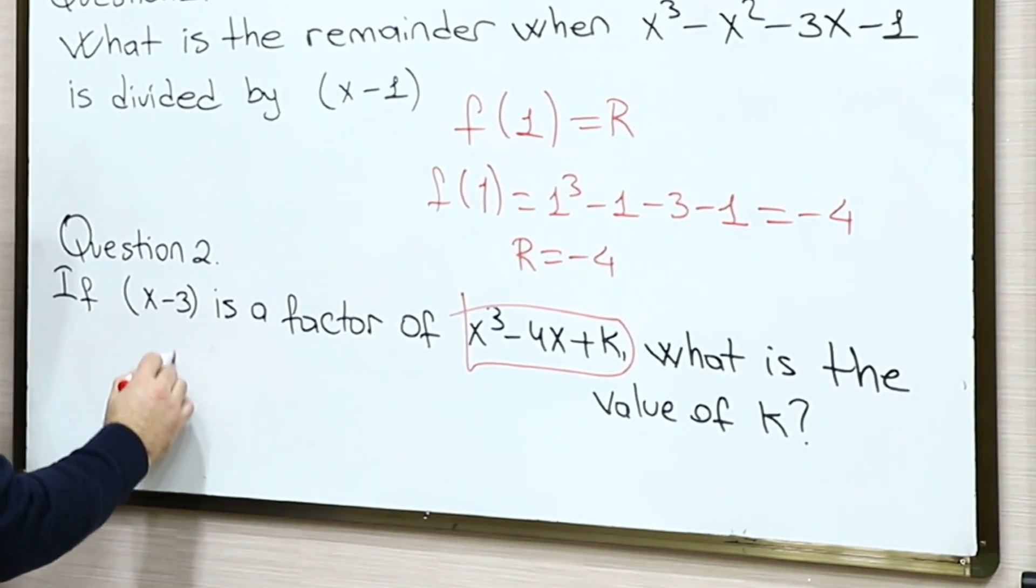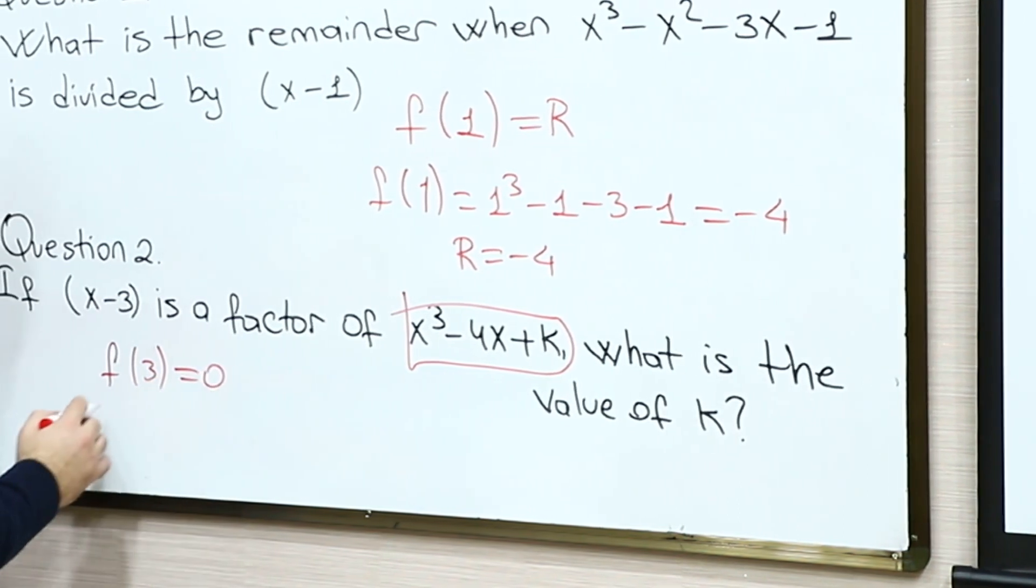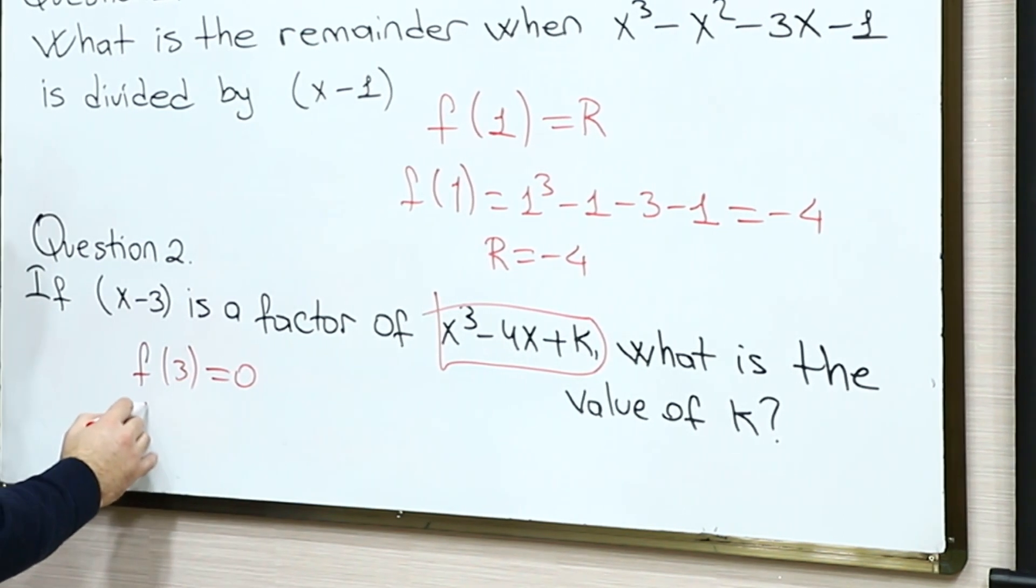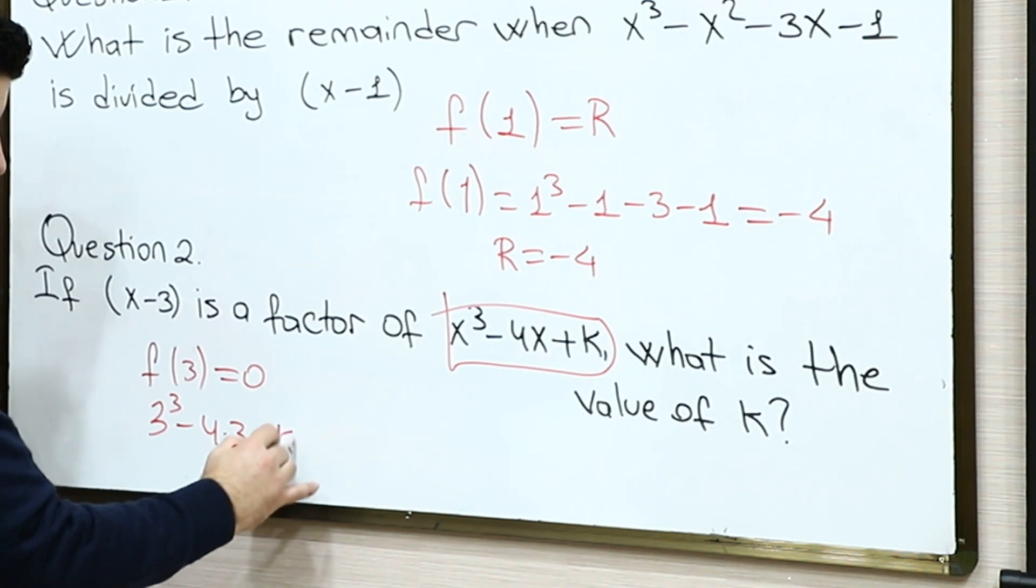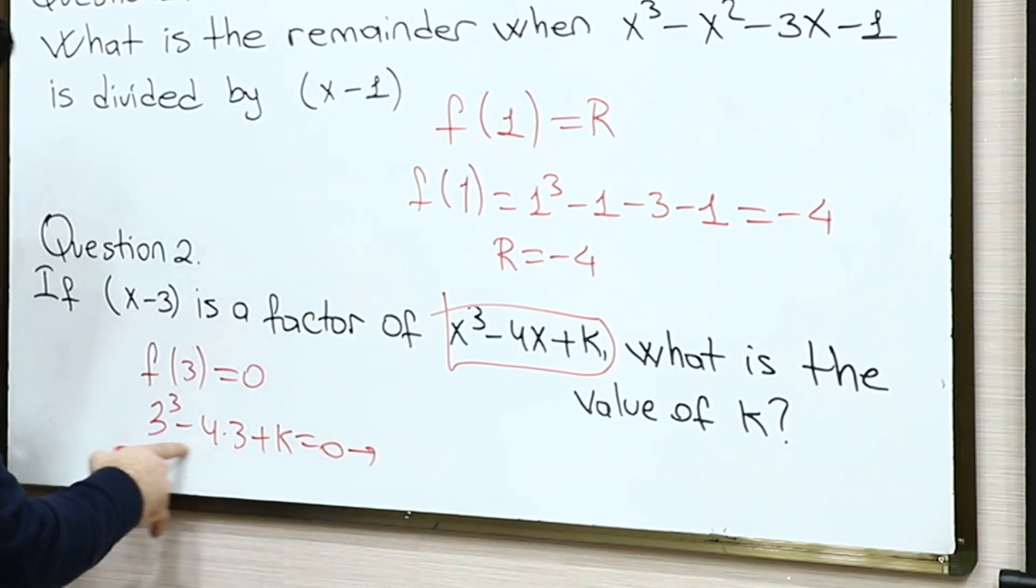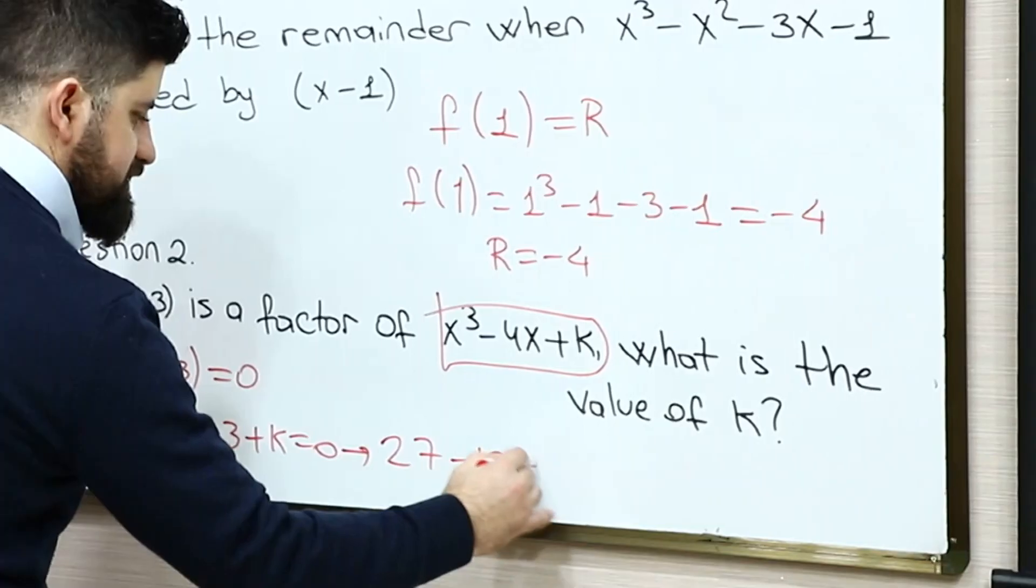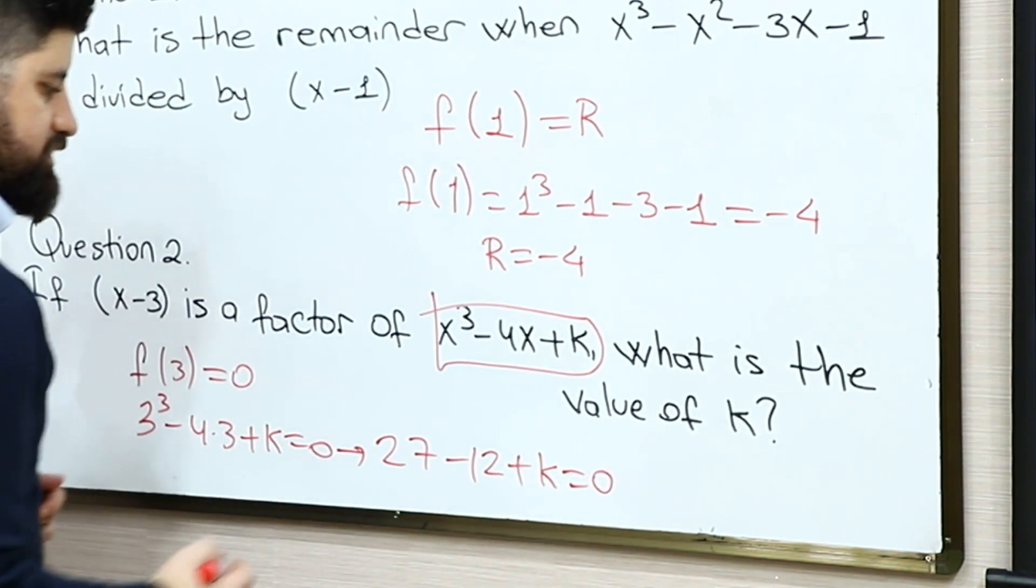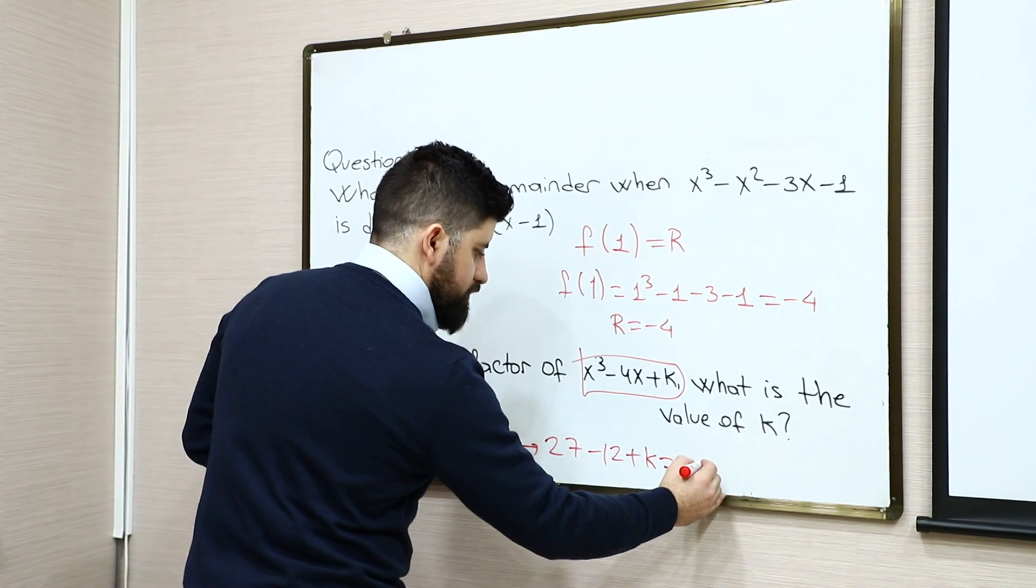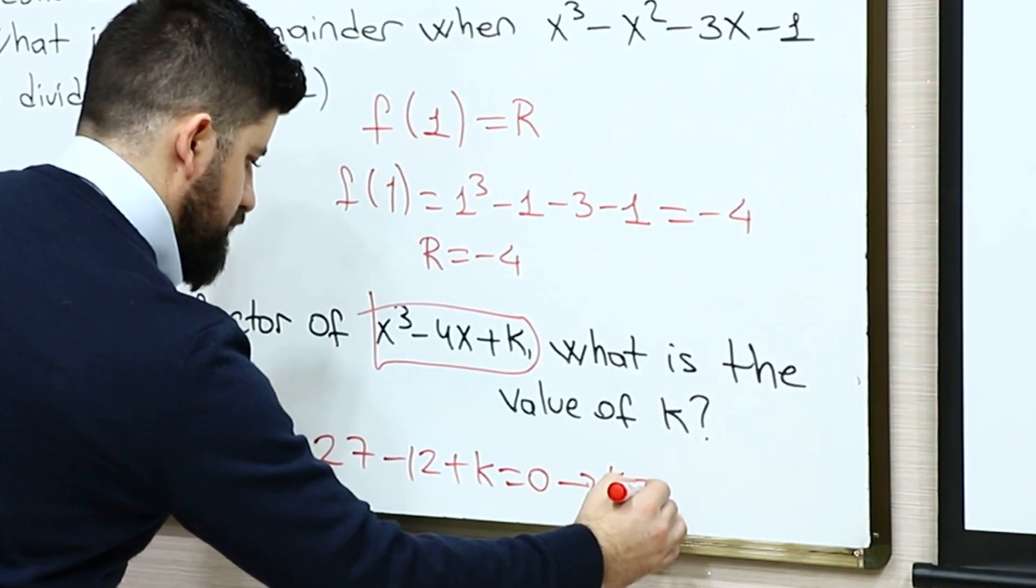So when we just plug 3 in x, it's going to be equal to 0. So let's just simply plug 3 in x. So 3³ minus 4 multiply 3 plus k is equal to 0. And we get here 27 minus 12 plus k is equal to 0. And which means that k is going to be equal to negative 15.